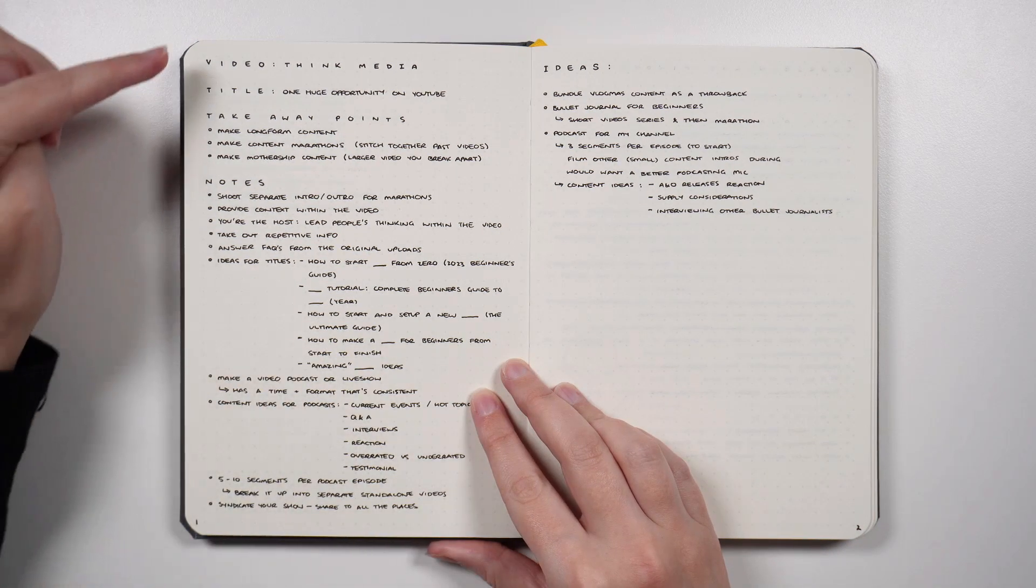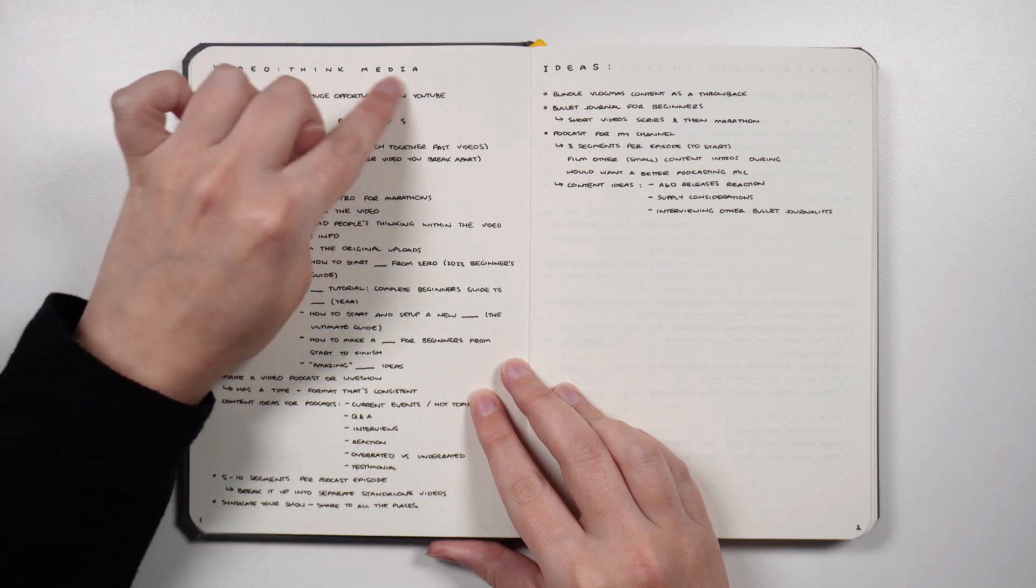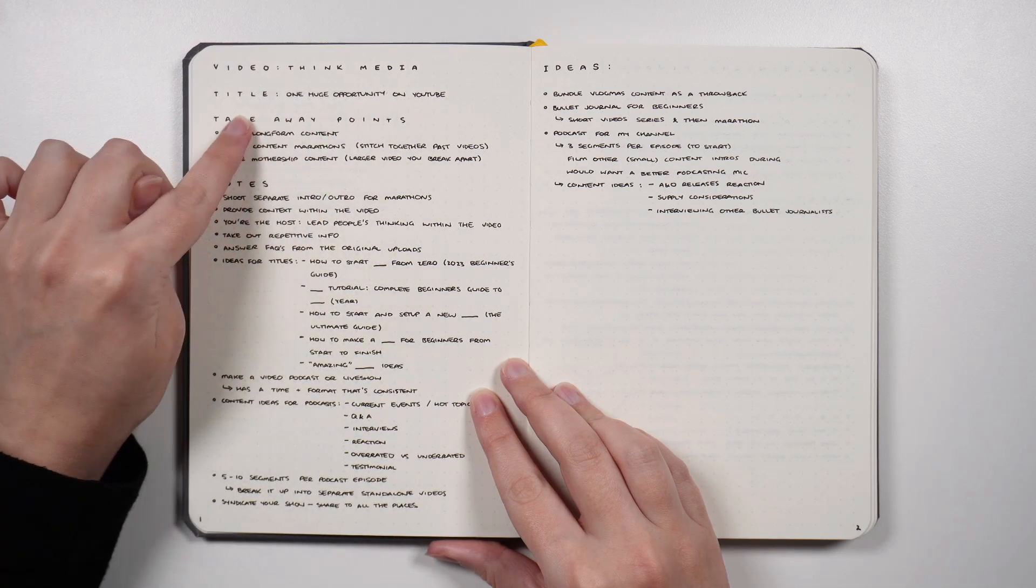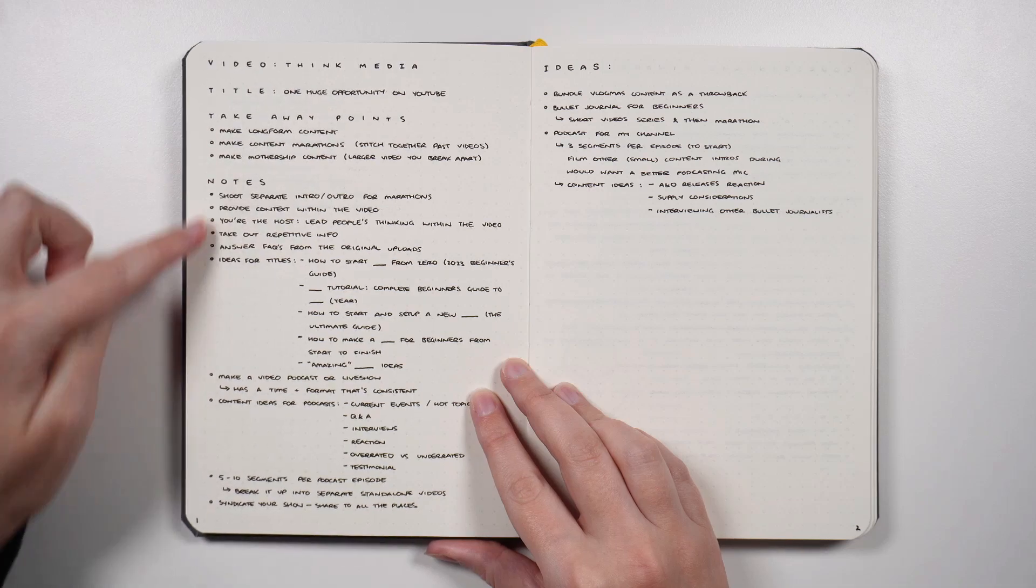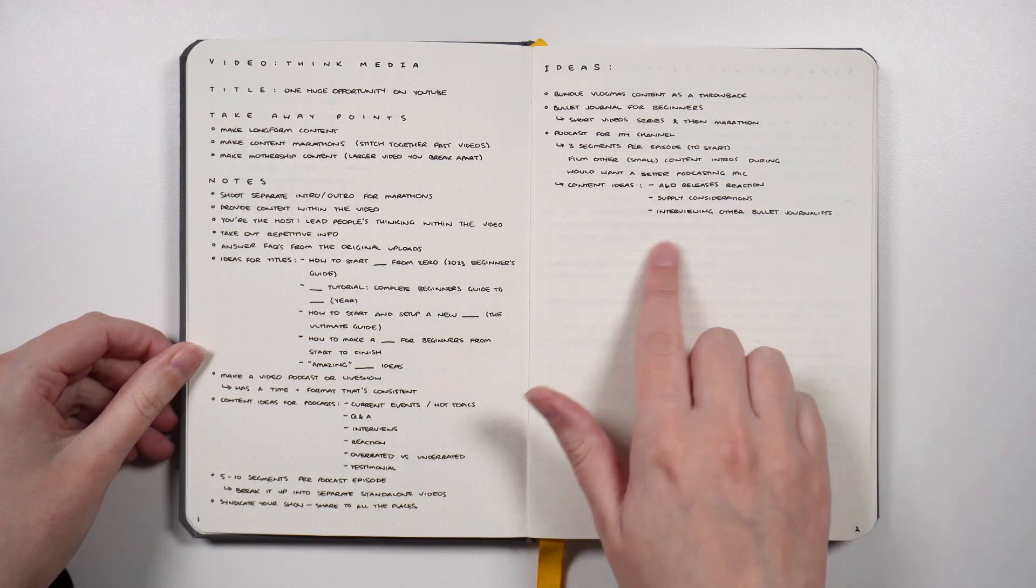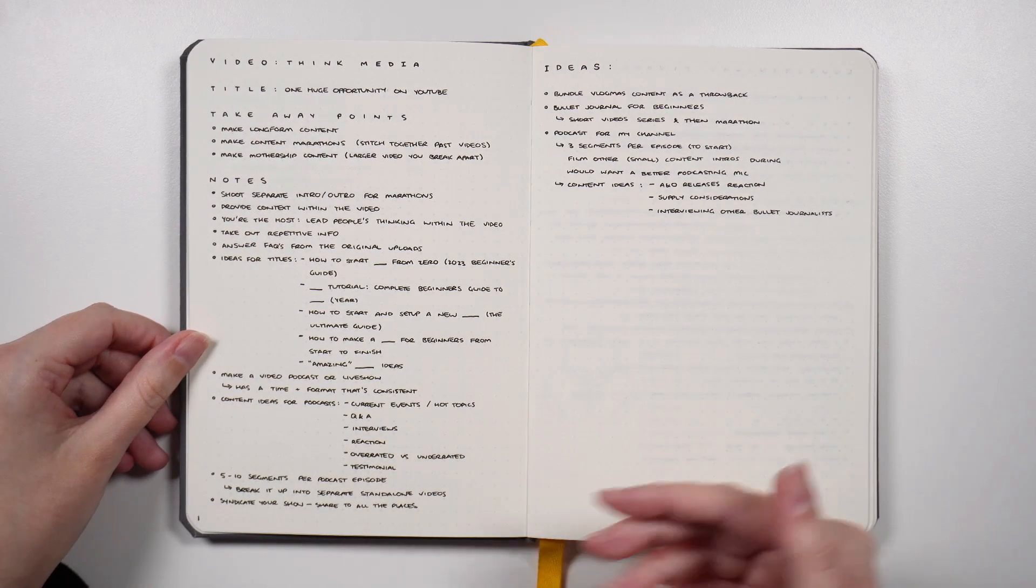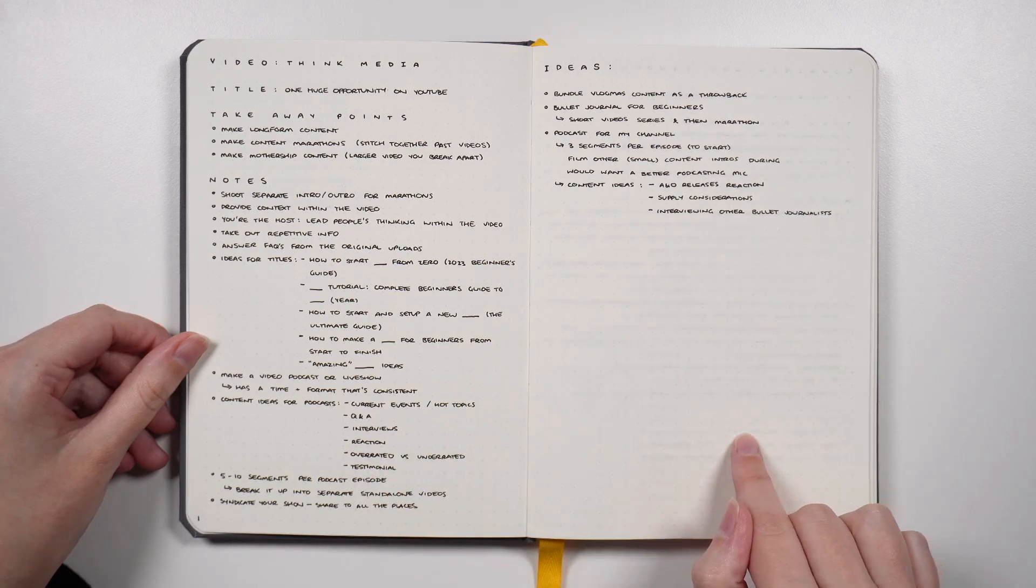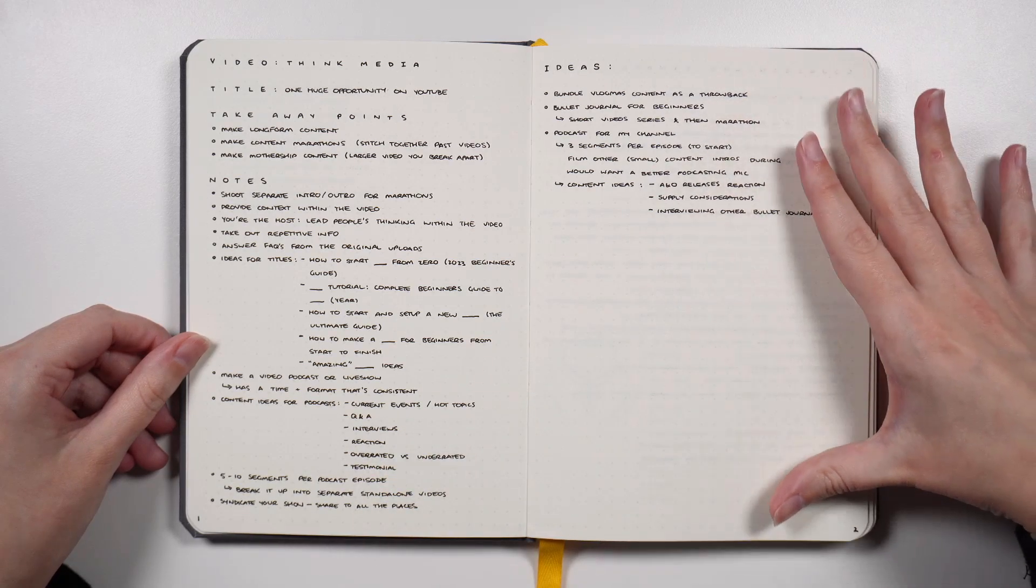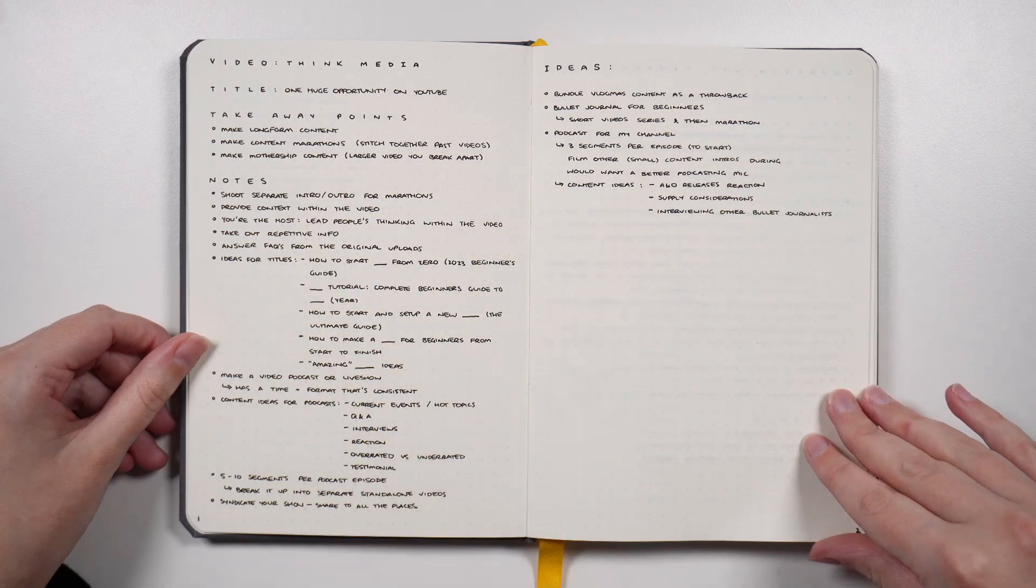But just like we had on the sample page before, we've got the type of content, who it was from, what the title of the content was, takeaway points, my notes, and then ideas. When I set this one up I initially intended for every entry to be a full spread, so this would just be the ideas page for each of them and this would be the notes page for each of them.